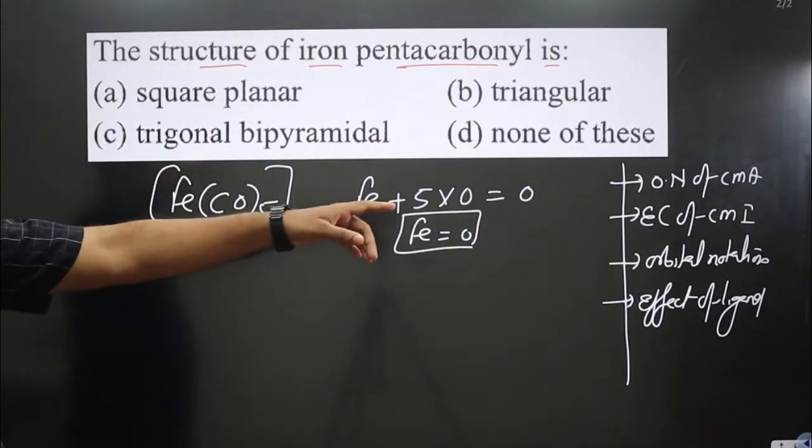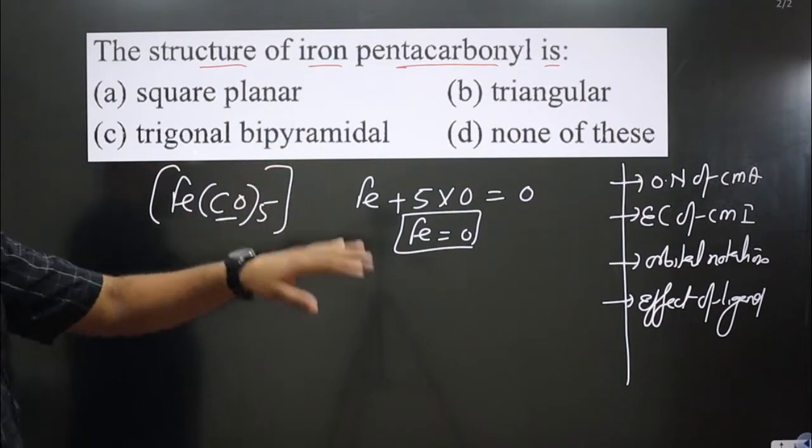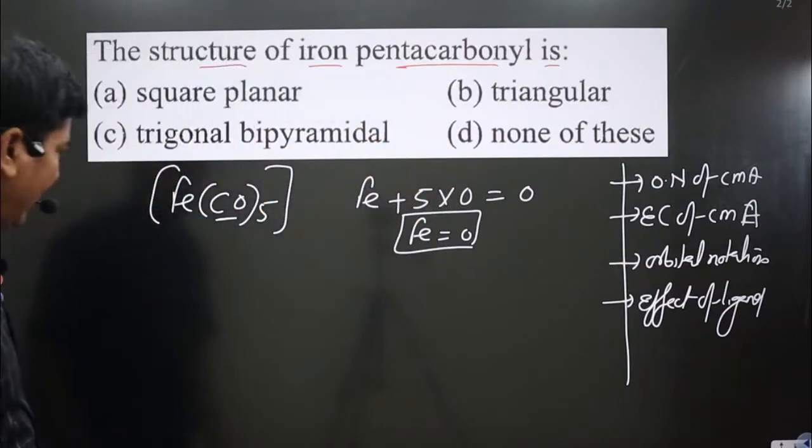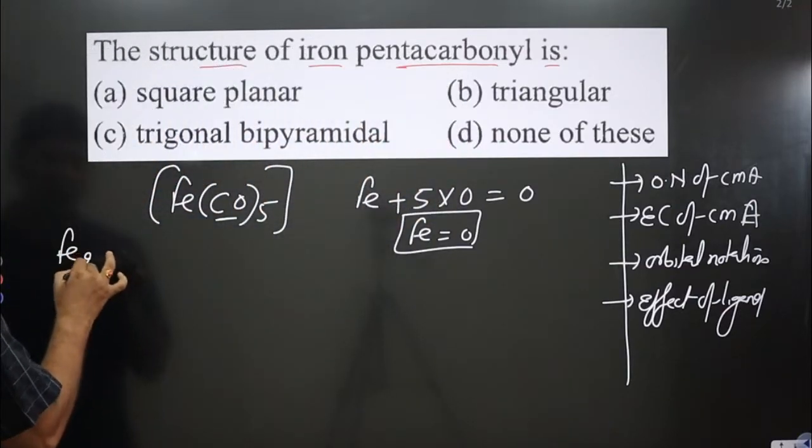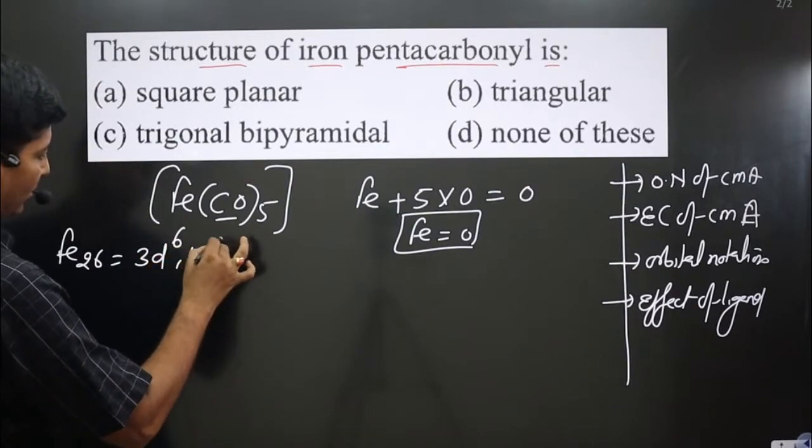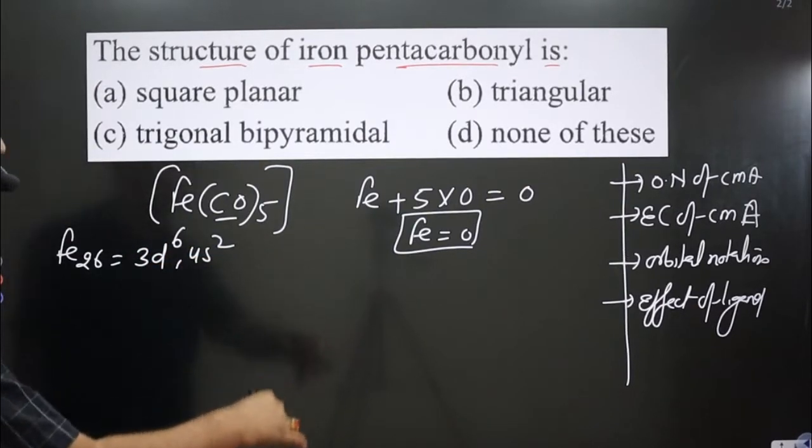Second, we write the electronic configuration of the central metal atom. Since Fe does not carry any charge, Fe has atomic number 26, and the outermost electronic configuration is 3d6 4s2.